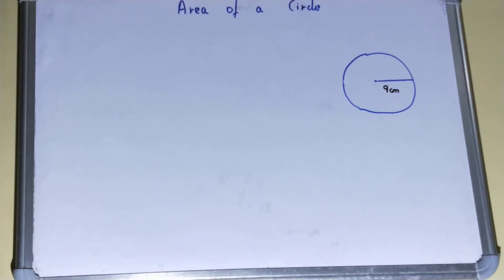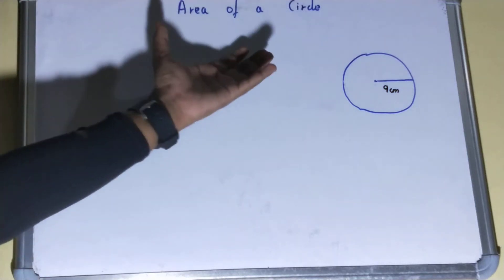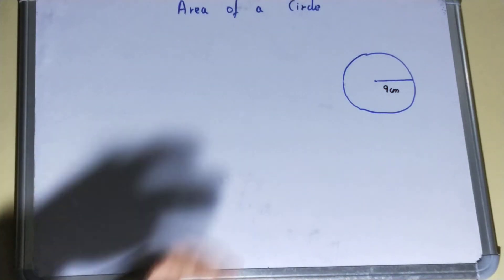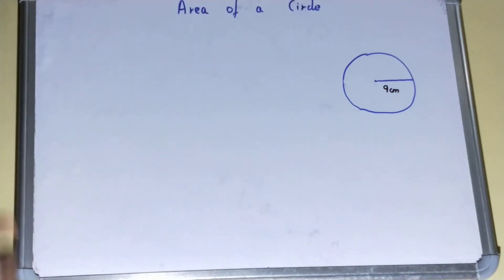Hello friends, in this video we will learn how we can find out the area of a circle. So let's start. Here you can see the circle. For finding out the area of the circle, we actually need the radius of the circle.